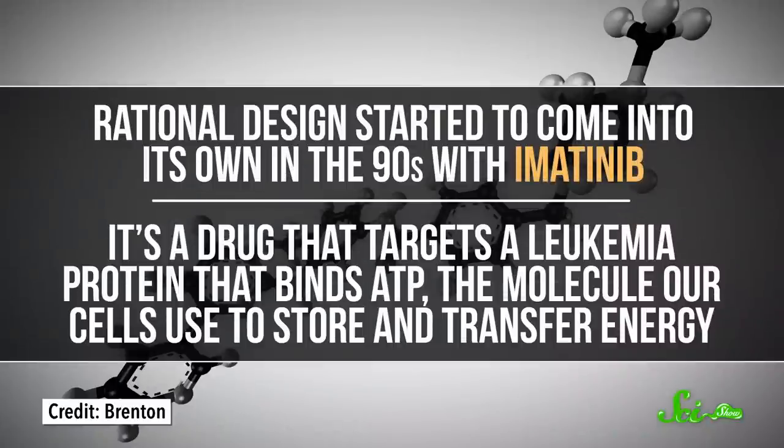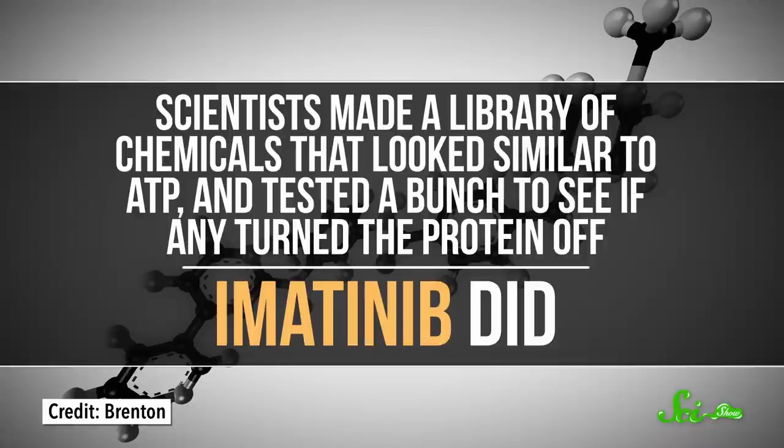Rational design started to come into its own in the 1990s with imatinib. It's a drug that targets a leukemia protein that binds ATP, the molecule our cells use to store and transfer energy. Knowing this information, scientists made a library of chemicals that looked similar to ATP and tested a bunch to see if any of them turned the protein off. Imatinib did. This was huge. We had designed a drug with a specific molecular target in mind. It created hope that we could do this for all kinds of diseases.